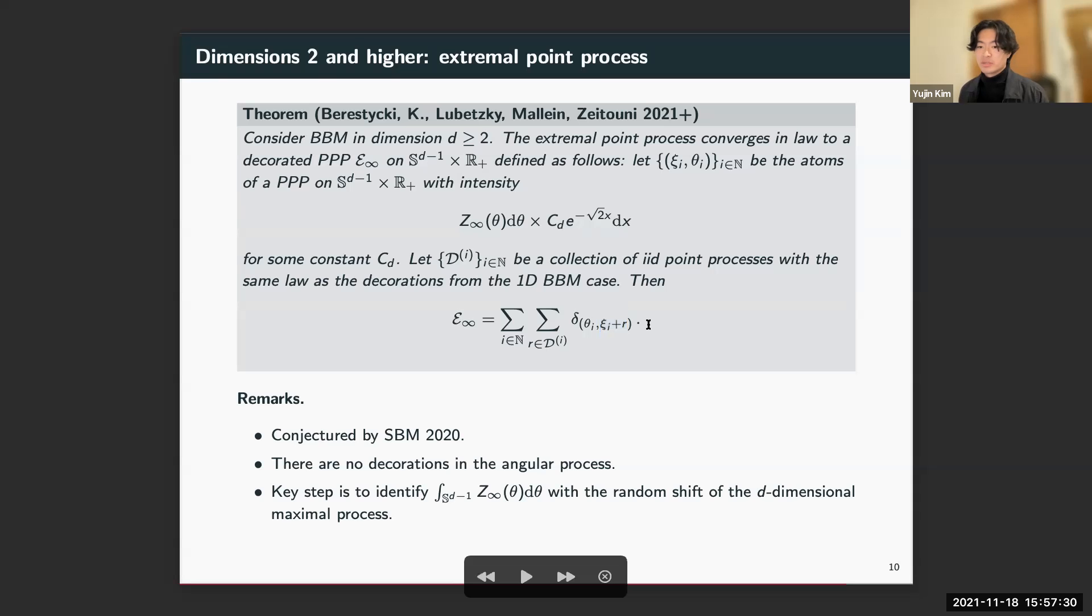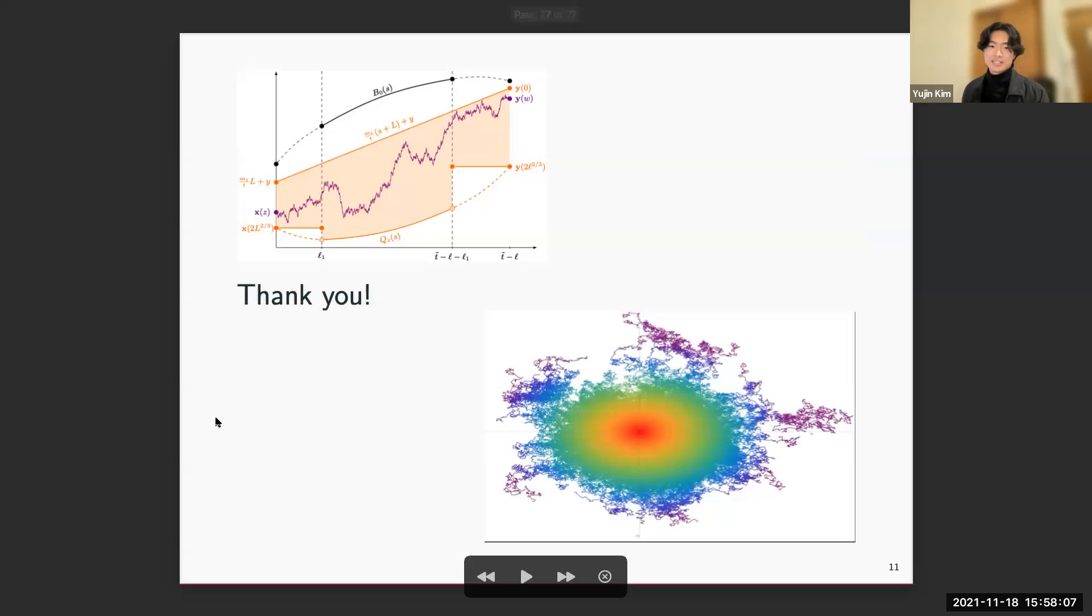To conclude with some final remarks, this description was conjectured in that same paper of Stuczynski, Berestycki, Mallein mentioned on the previous slide. Also mentioned that a key step towards the proof was being able to analyze this limiting measure Z_∞(θ)dθ very precisely. In particular, we identified the full measure—this integral here—with the random shift that we saw in the law of the d-dimensional maximal process. This is what we call just Z_∞ with no θ. Okay, so that's all I have to say. Thanks a lot.